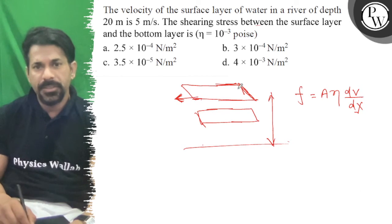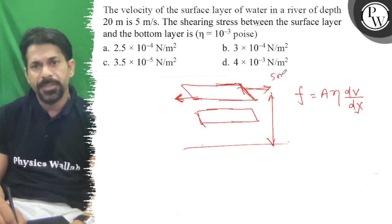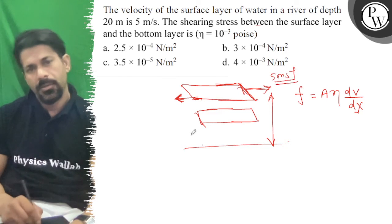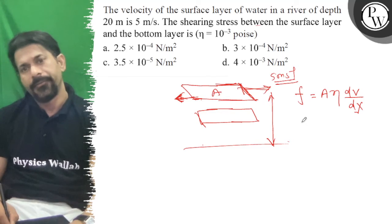The velocity of surface layer of the water in a river of the depth of 20 meters. Then, this is the viscous force of the surface layer. This is the shear stress.